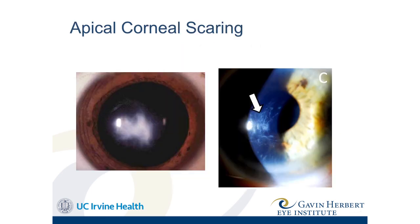As things progress, we can have scarring, typically at the apex. The innermost layer of the cornea, Descemet's membrane, if progression keeps going, can actually burst. When that bursts, you can have scarring — you can have microbursts producing smaller scars — but you can also have acute hydrops, where fluid rushes into the cornea causing an acute decrease in vision. That typically clears up or may leave a scar.